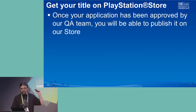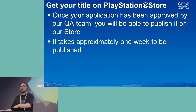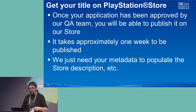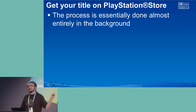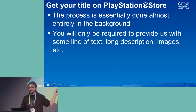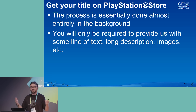Once your game passes, you'll be able to publish it. It takes approximately one week from the moment your game receives the okay from the QA team to the moment it gets on the store. We just need your metadata — the store description — from you. The entire process is essentially done in the background; the only things you need to provide are a set of messaging, images, long description, and any text you want to advertise your game with.